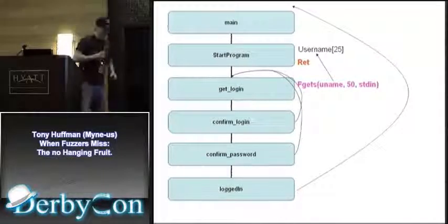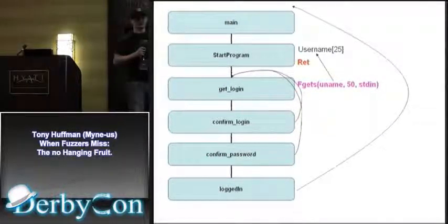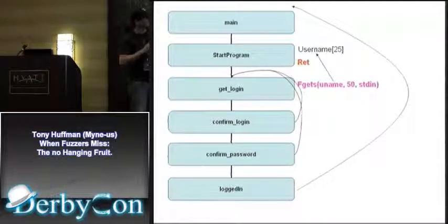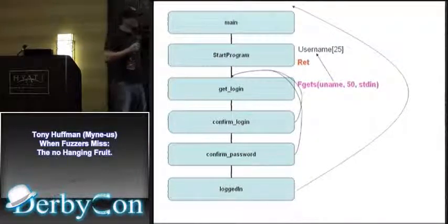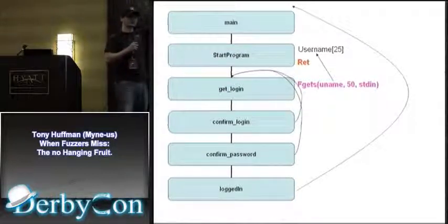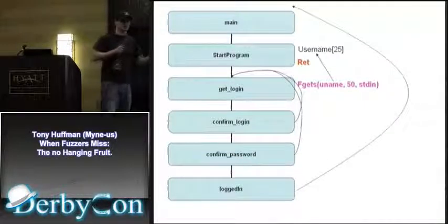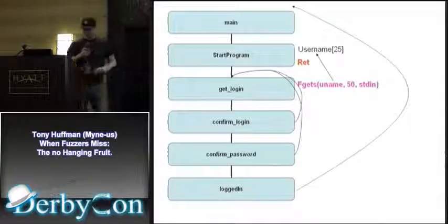There's a program graph here. Main calls start program, start program goes into get login. If you put in the correct username and password, it goes down to login and returns from the program and closes. Put in the incorrect username and it goes back to get login; incorrect password also goes back to get login. It never exits without putting in the proper data. The key — shown in pink — is where fgets is, and you're pushing a 50-size buffer into a 25-size character set. The exploit is at RET. In order to be successful, you have to tear down the start program stack frame for RET to hit where it needs to go. If you don't tear down that stack frame, you could fuzz those targets all day with as many A's as you want and it'll just sit there running, even though you are actually overflowing a buffer.